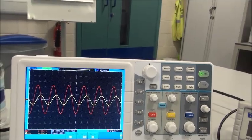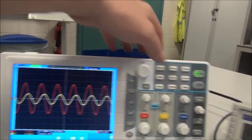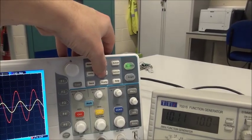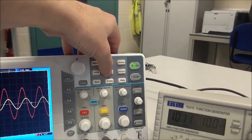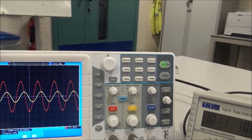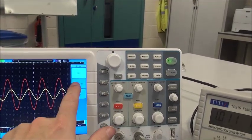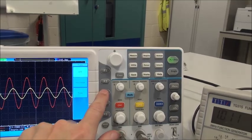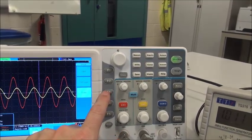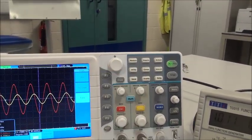To measure things like phase, for example, we've got the cursor control over here. We can have it for voltage or for time, so we would select time, and then we get two cursors which we can adjust using these controls.